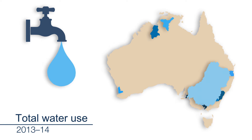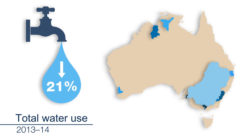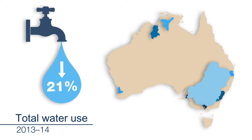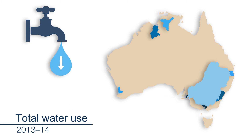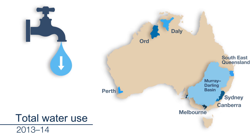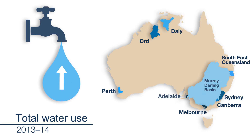National water use dropped by 21% compared to the previous year. This is mainly due to a large decrease in water use in the Murray-Darling Basin, reflecting the low water storage and drier conditions across the region. All other regions except for Adelaide reported increased water use.